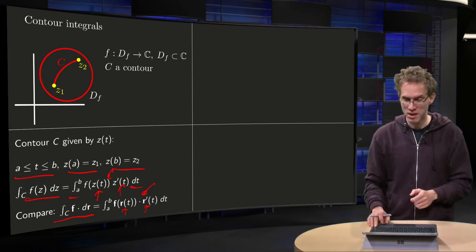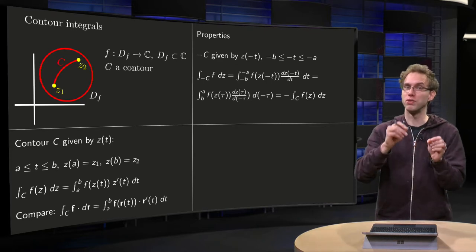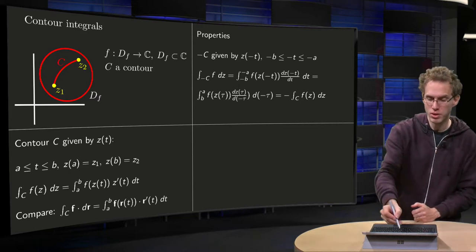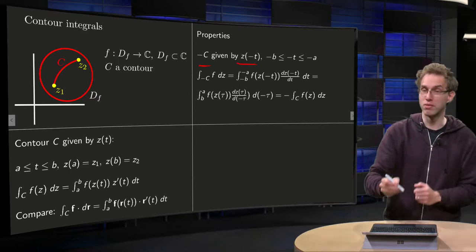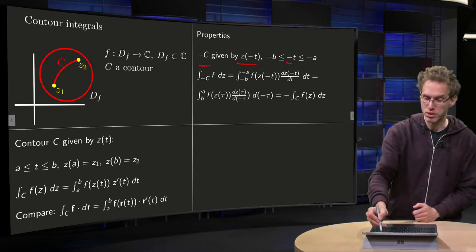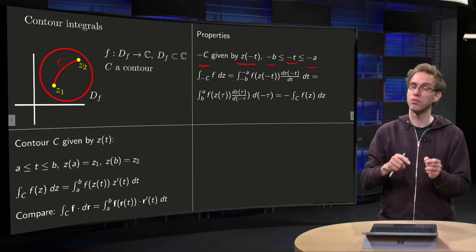So let's take a look at two properties. What happens if you don't go from A to B, but from B to A with your line integral? So your minus C is given by z of minus T, you go the other way. And now minus T runs from minus B to minus A, you go from B to A instead of from A to B.